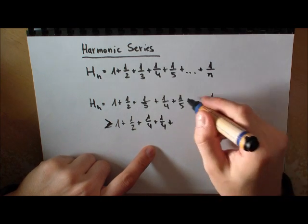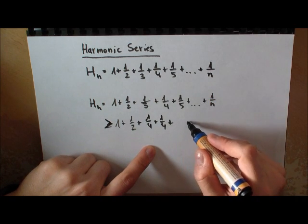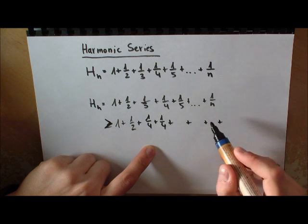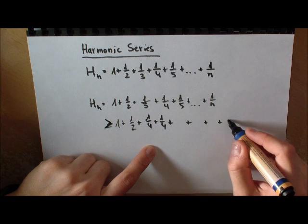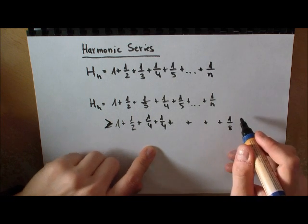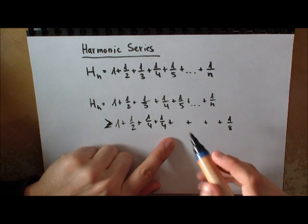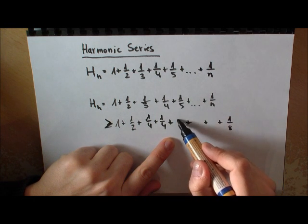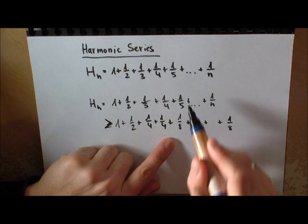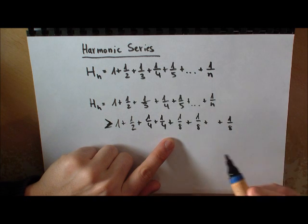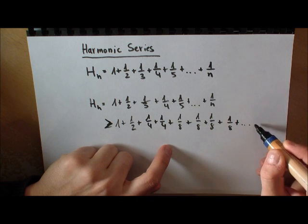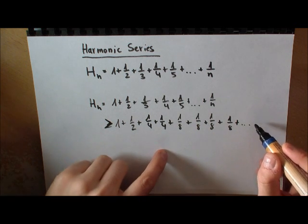Now if I continue onwards, I just leave these blank and I will fill them in. So we would have here 1 over 8. So here normally we would have 1 over 5. But actually this is larger than 1 over 8. 1 over 6 is also larger than 1 over 8. This is also larger than 1 over 8. And actually you should see what I'm doing here.